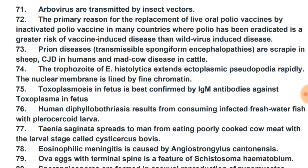Arboviruses are transmitted by insect vectors — for example, dengue. The primary reason for the replacement of live oral polio vaccines by inactivated polio vaccine in many countries where polio has been eradicated is the greater risk of vaccine-induced disease than wild-virus-induced disease.